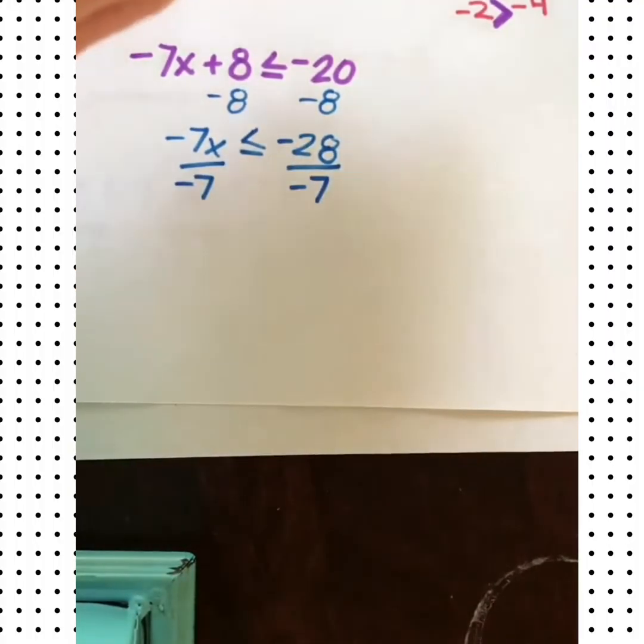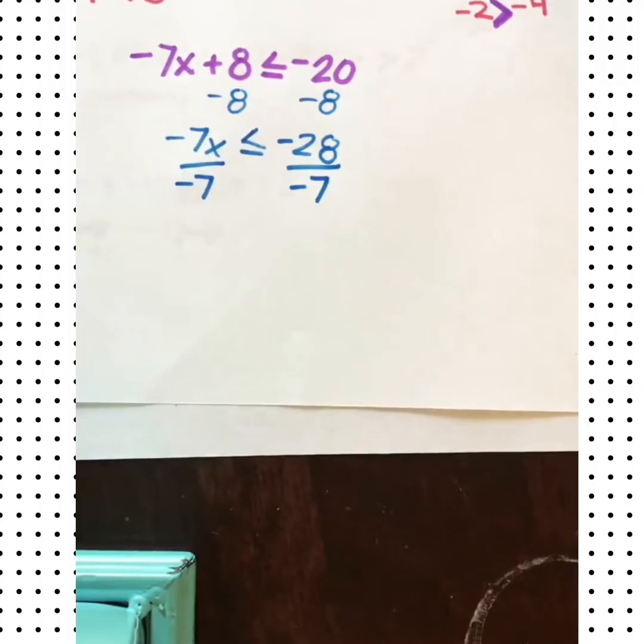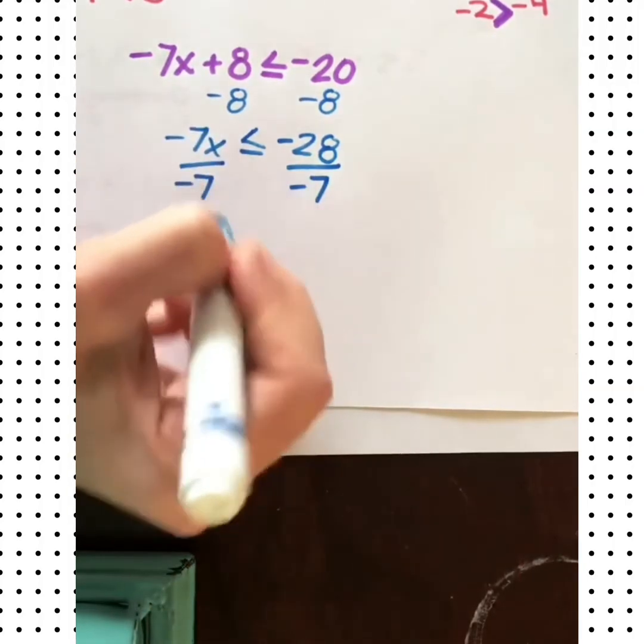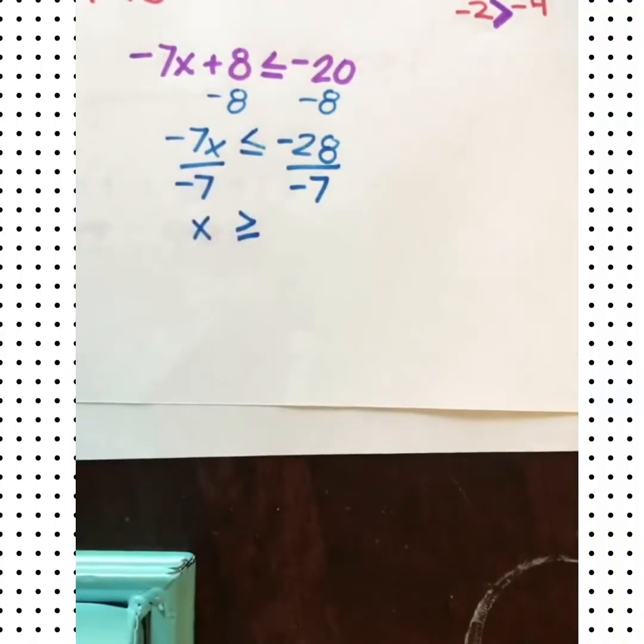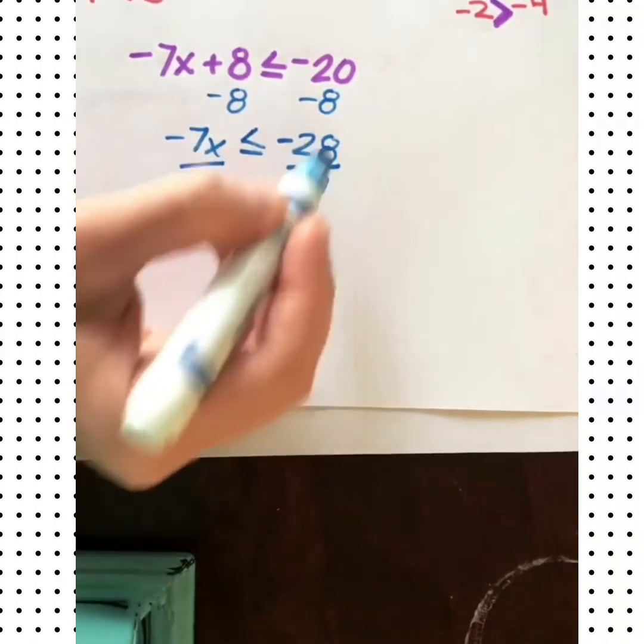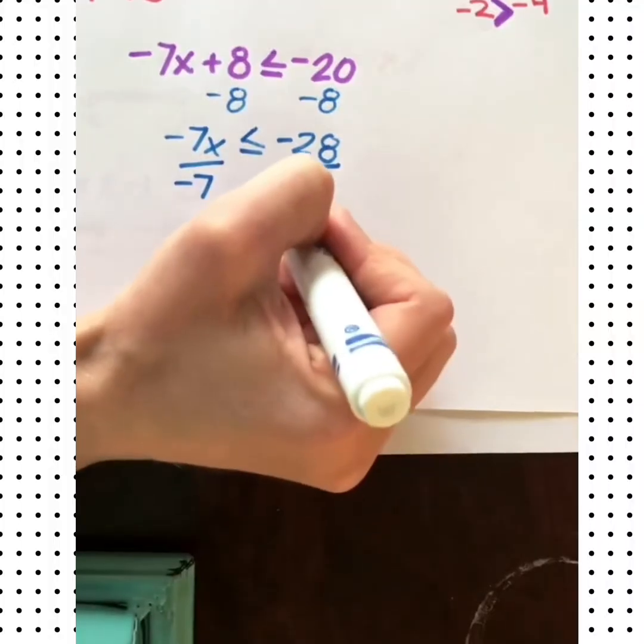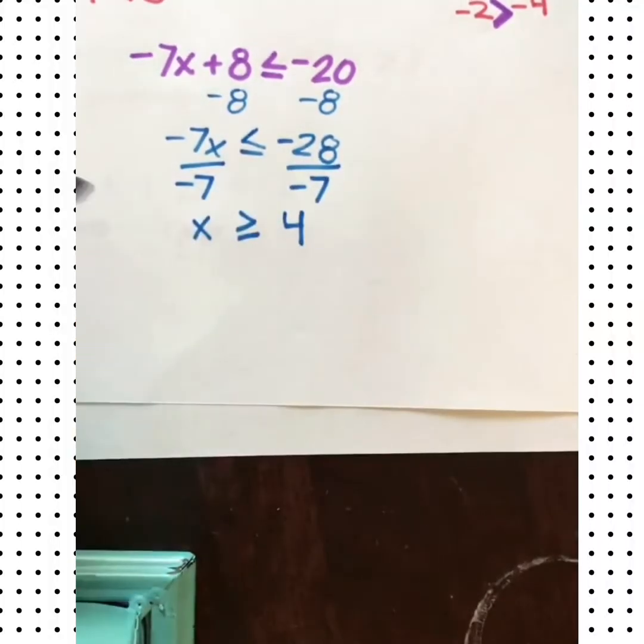But remember what happened up here when we divided by negative, the sign had to flip. So over here we have our x, the sign flips around to become a greater than or equal. Negative 28 divided by negative 7 is 4, and that's your solution.